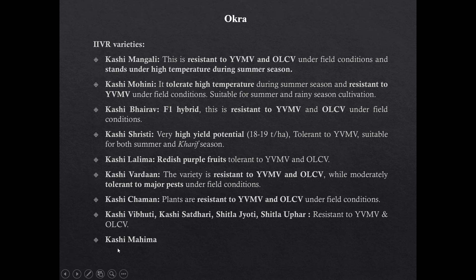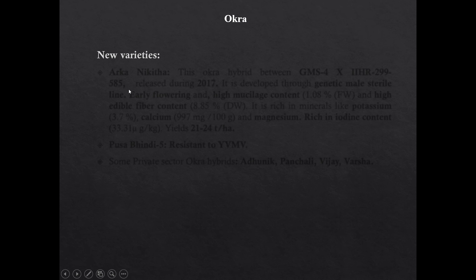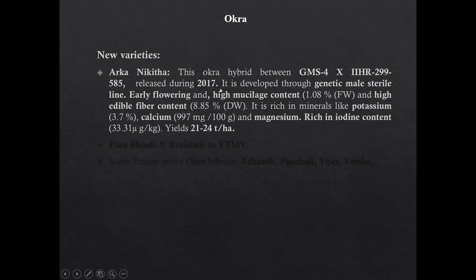Other variety is Kashi Mahima. Now new varieties: Arka Nikita is an okra hybrid variety developed by crossing GMS4 and IIHR 299-585. It is released in 2017 and developed through genetic male sterility. It is early flowering, having high mucilage content and high edible fiber content. It is rich in minerals like potassium, calcium, and magnesium, and also rich in iodine content. It is a high yielding variety.